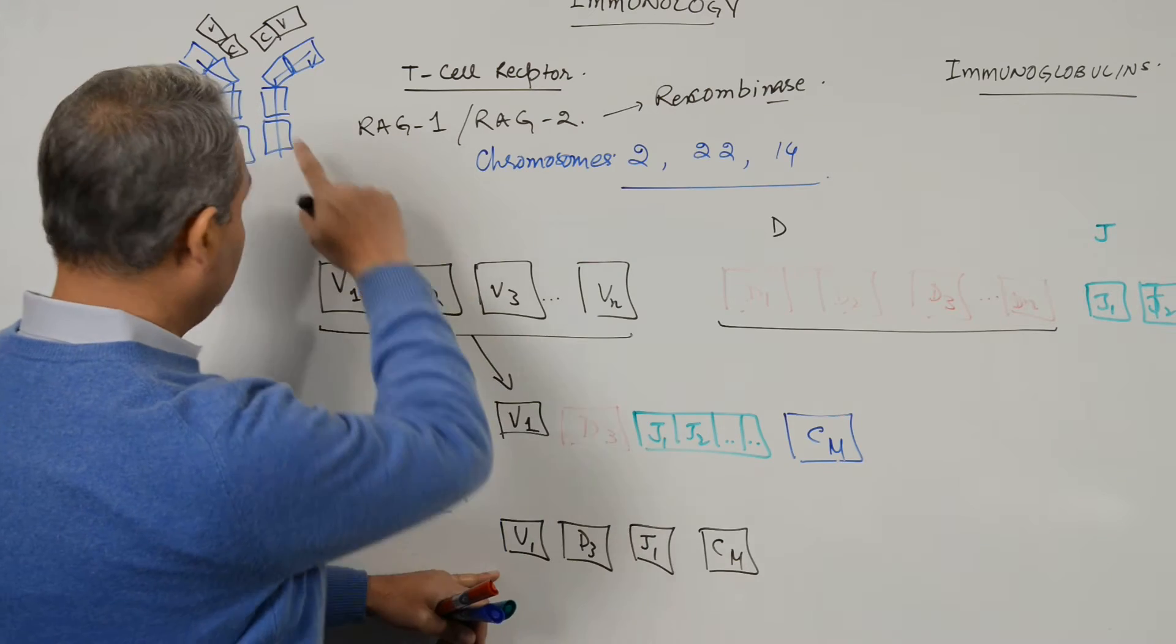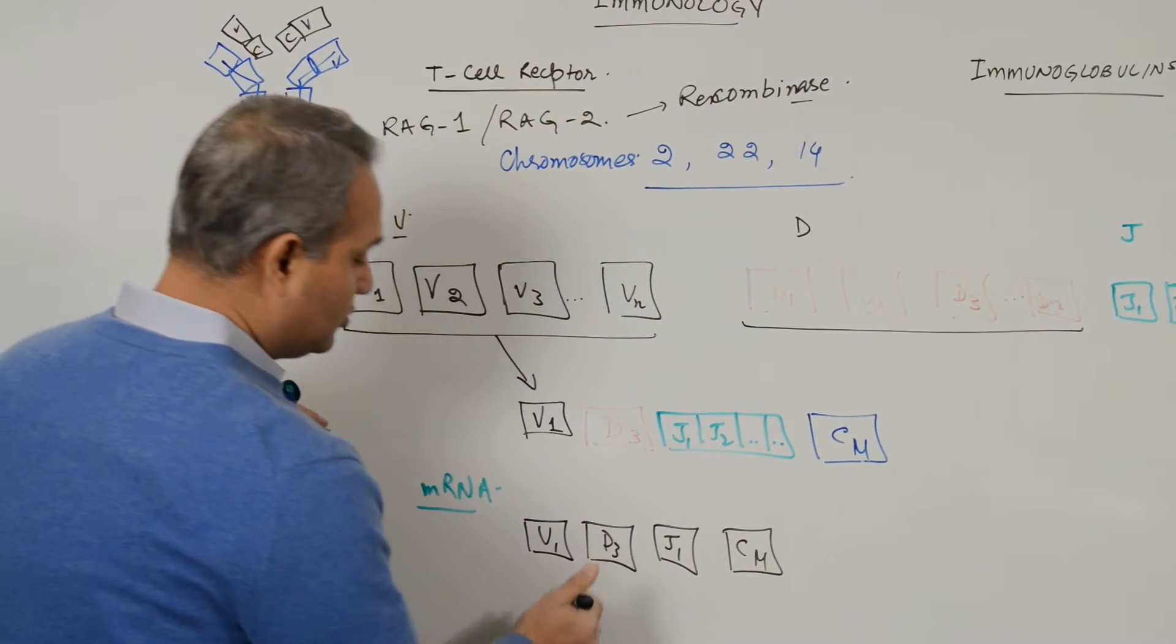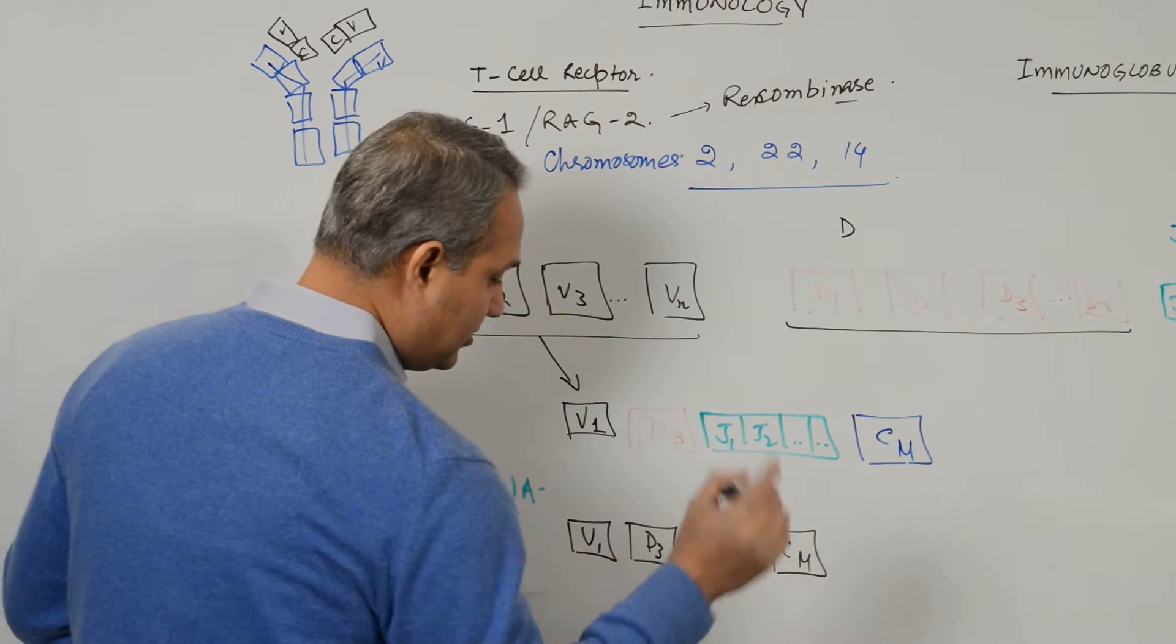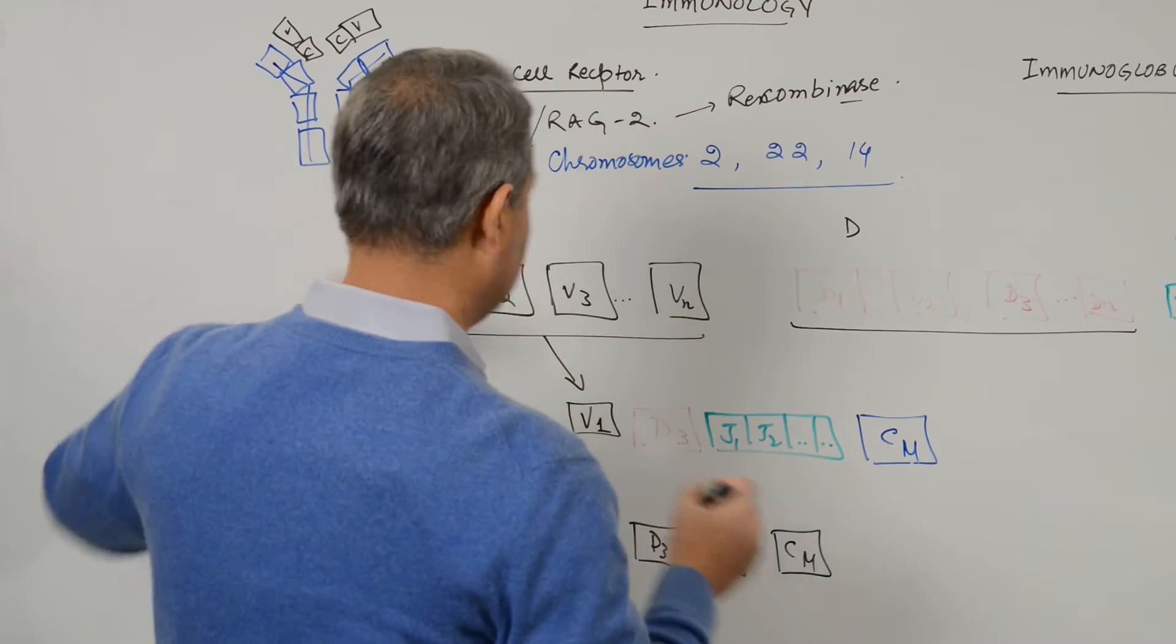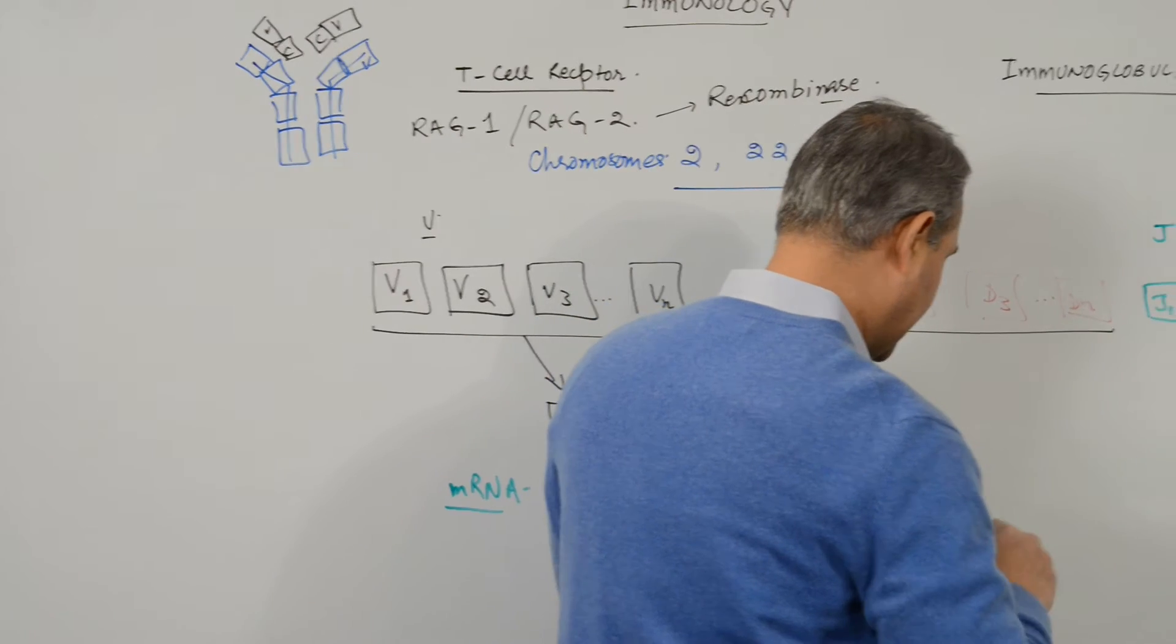This is going to make the immunoglobulin, so this would be now one more thing. Please remember V, D, and J, so I am going to make the molecule back here.